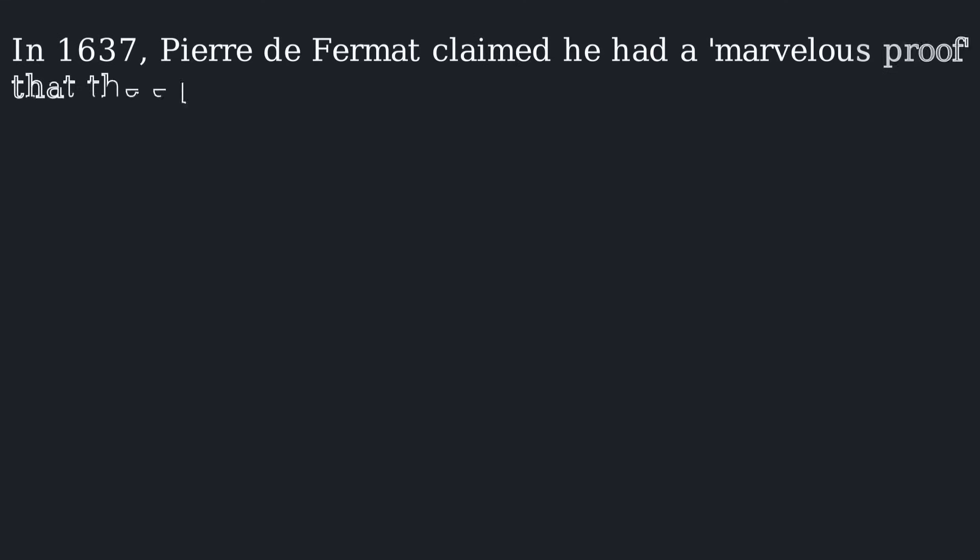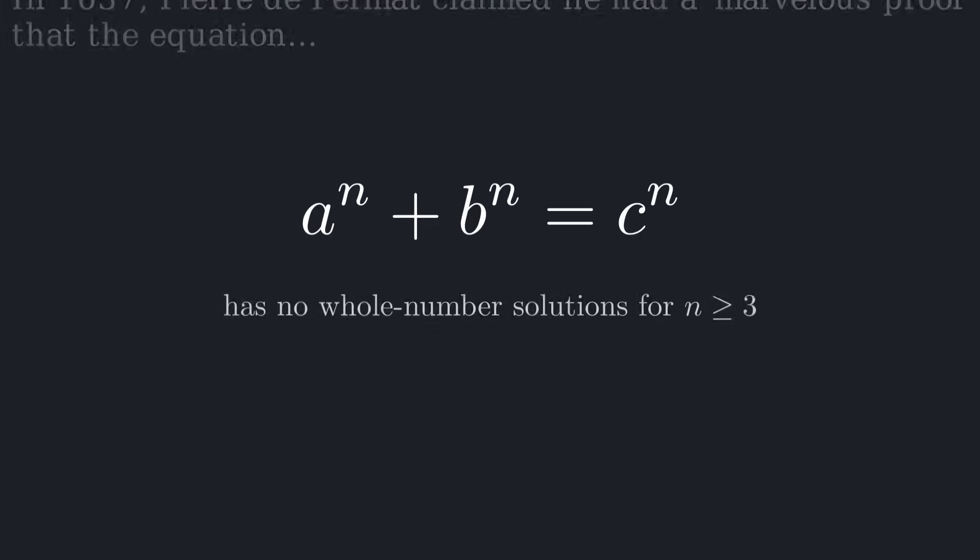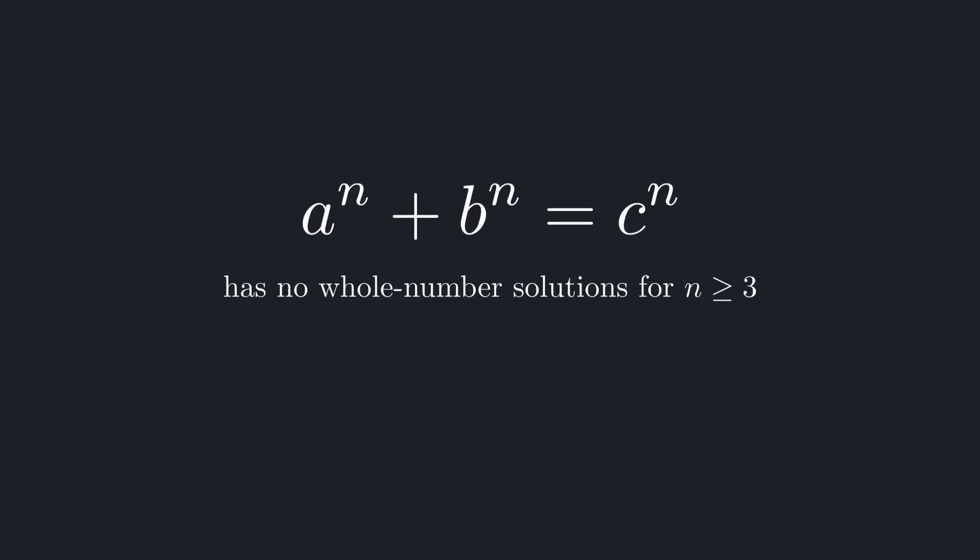In 1637, Pierre de Fermat claimed he had a marvelous proof that the equation a to the n plus b to the n equals c to the n has no whole number solutions for n greater than or equal to 3.